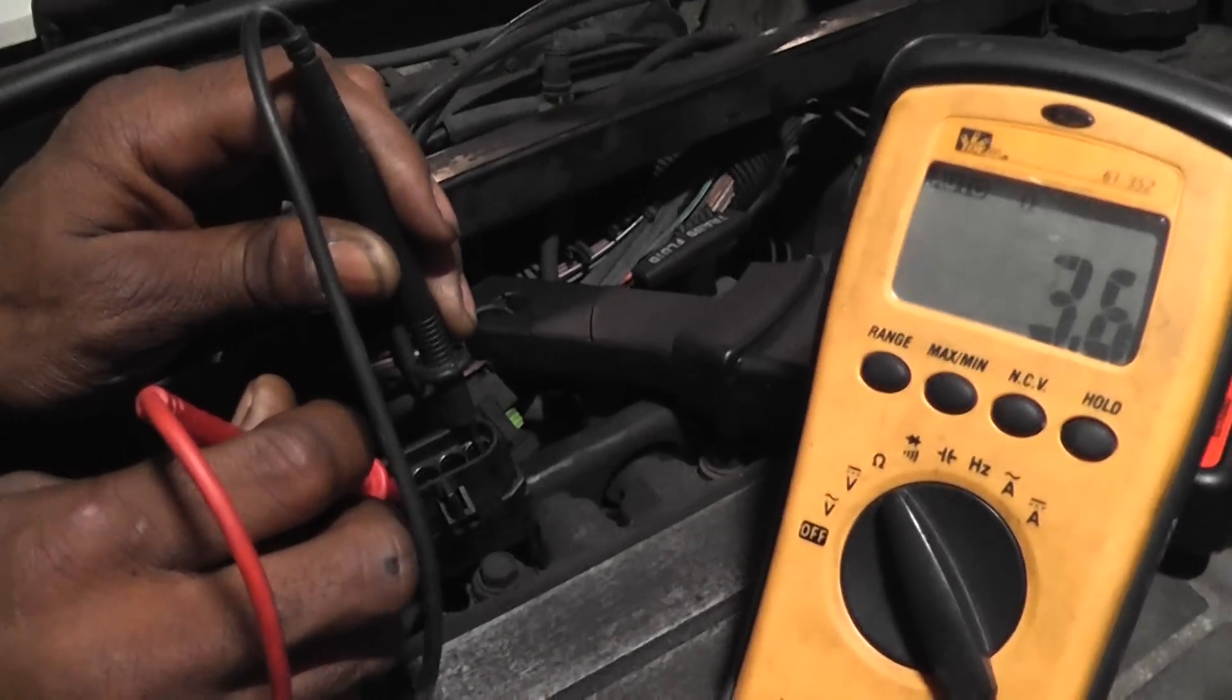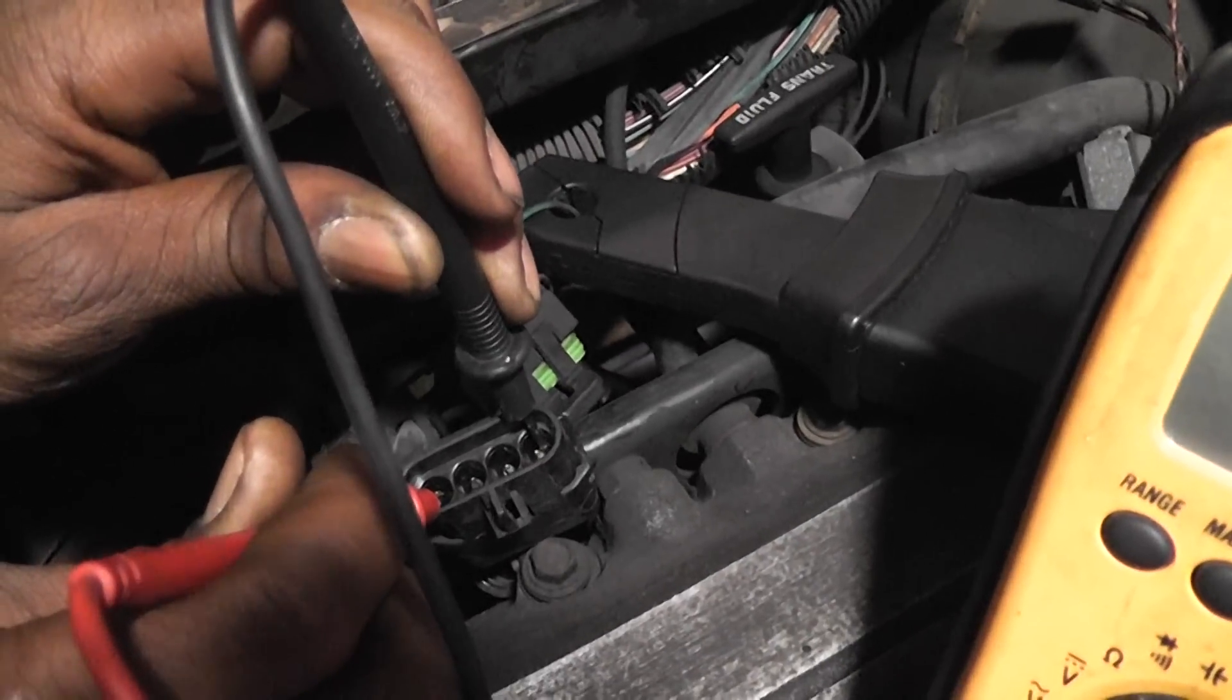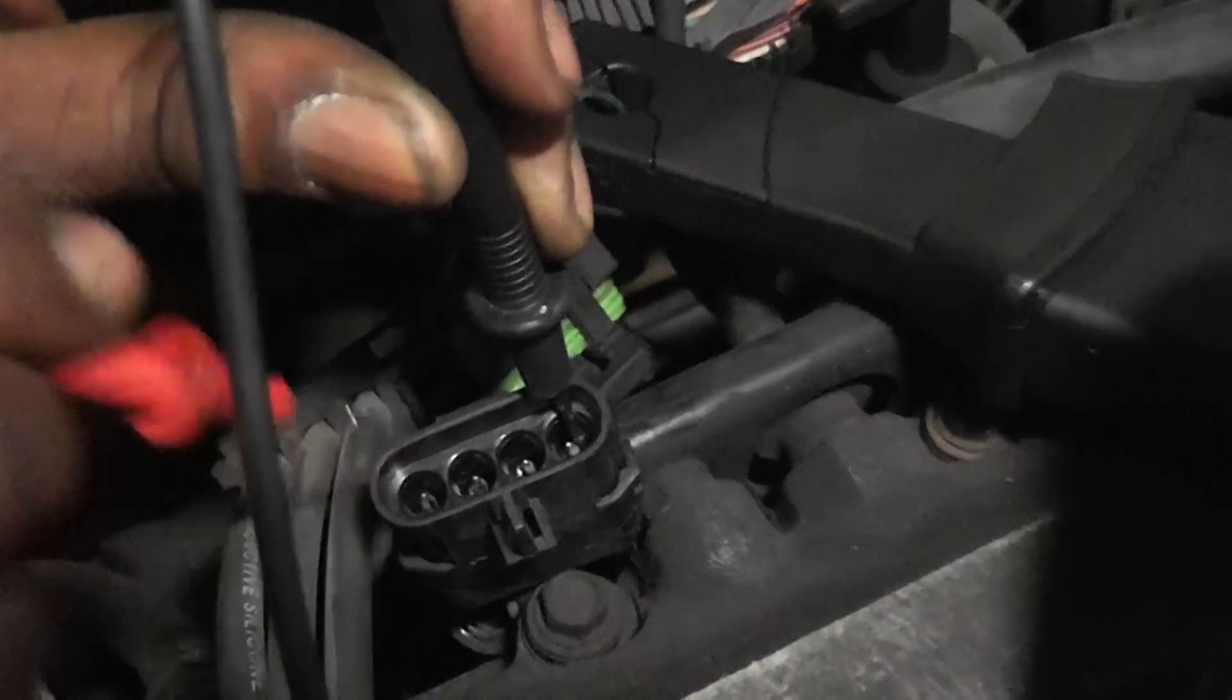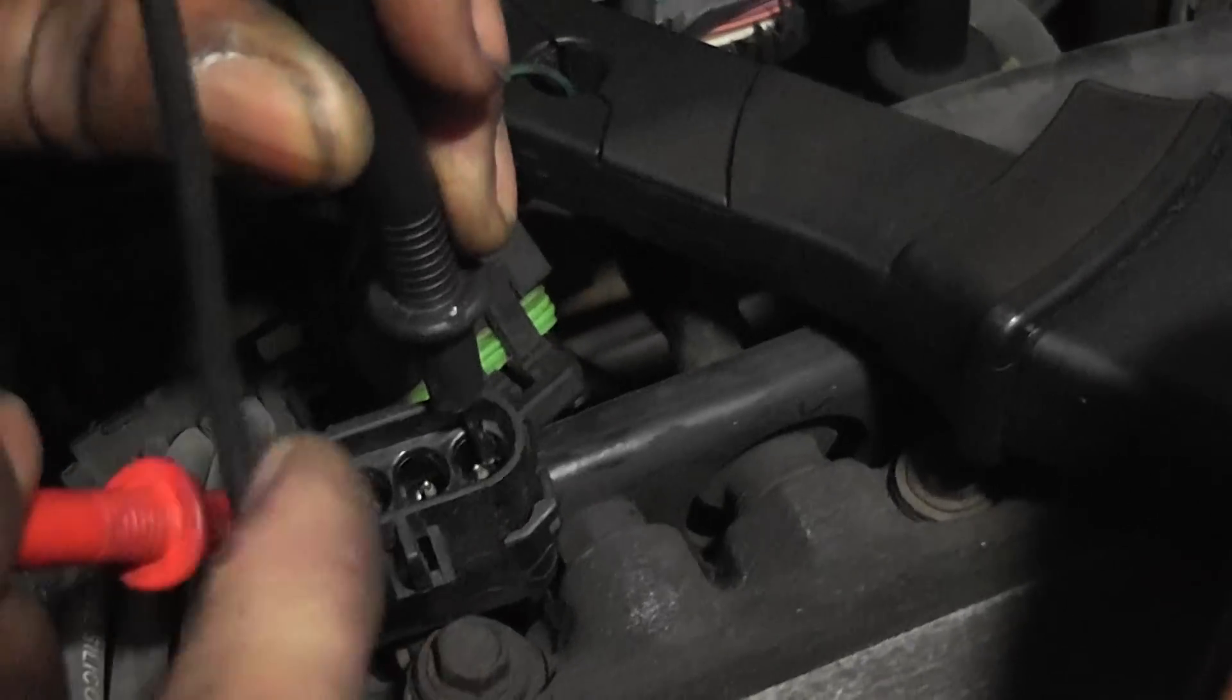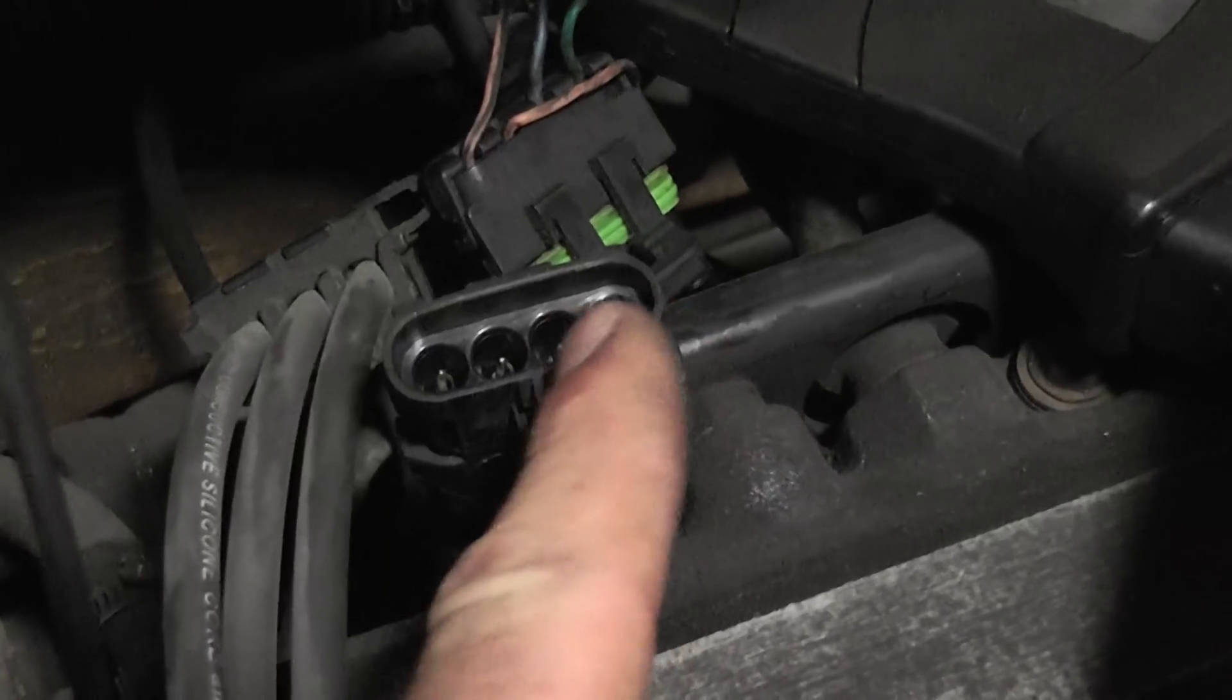Okay, we've unplugged the 4-pin connector on the back of the intake, and we're on the injector harness side of the connector. You have a power here, a power here, and your two control wires.